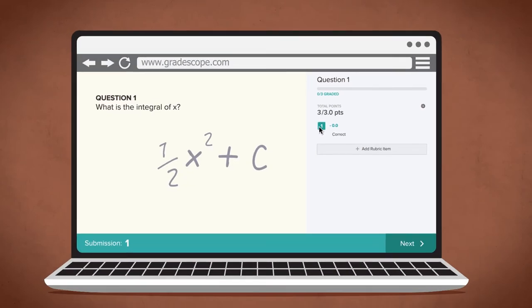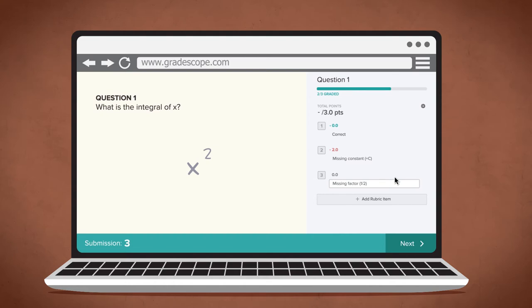Gradescope has really streamlined the grading process. You don't have to spend class time with the logistics of handing out graded exams. The exams can be graded much more quickly and more accurately. There's much less question of whether students who made the same mistakes are getting the same grade. It's much more clear.